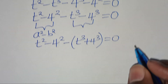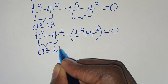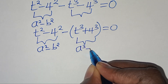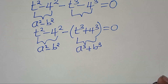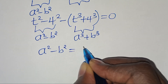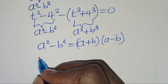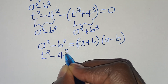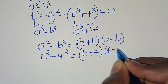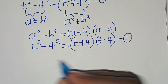This means the first part is the difference of two perfect squares, a squared minus b squared, which can be expressed as a plus b multiplied by a minus b. So t squared minus 4 squared can be expressed as t plus 4 multiplied by t minus 4. Let's call this equation 1.